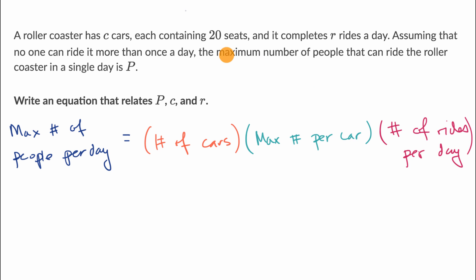Now, what are each of these things? They would have either given us numbers or variables for each of them. The max number of people per day, that's what we're trying to set on one side of the equation. That is this variable P right over here.